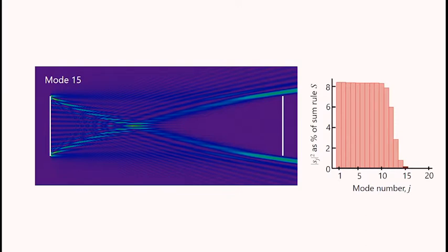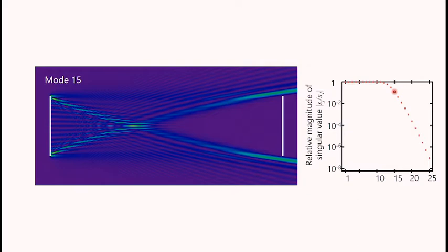And if we go to mode 15, we see the coupling is very weak. And we can look at that on a logarithmic scale as well. Well, it does exist, but we see it's mostly, on this figure here, missing the receivers.